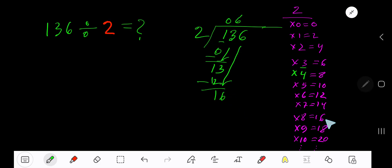2 goes into 16 how many times? 2 goes into 16 8 times. Write 8. 8 times 2 is 16. Subtract, 0 remainder. As our remainder is 0, we are done. So our answer is 68.